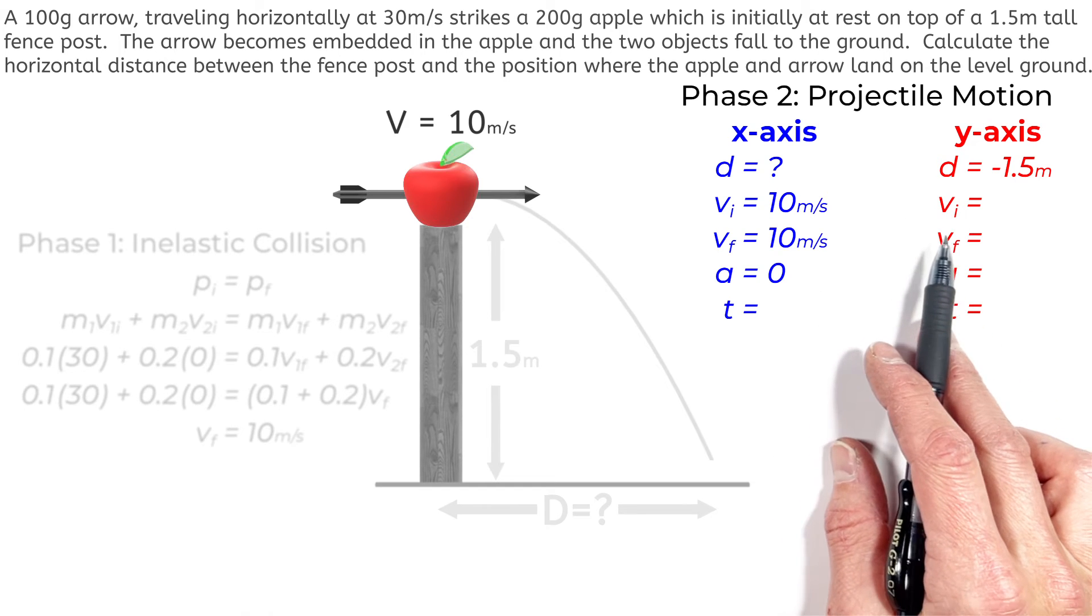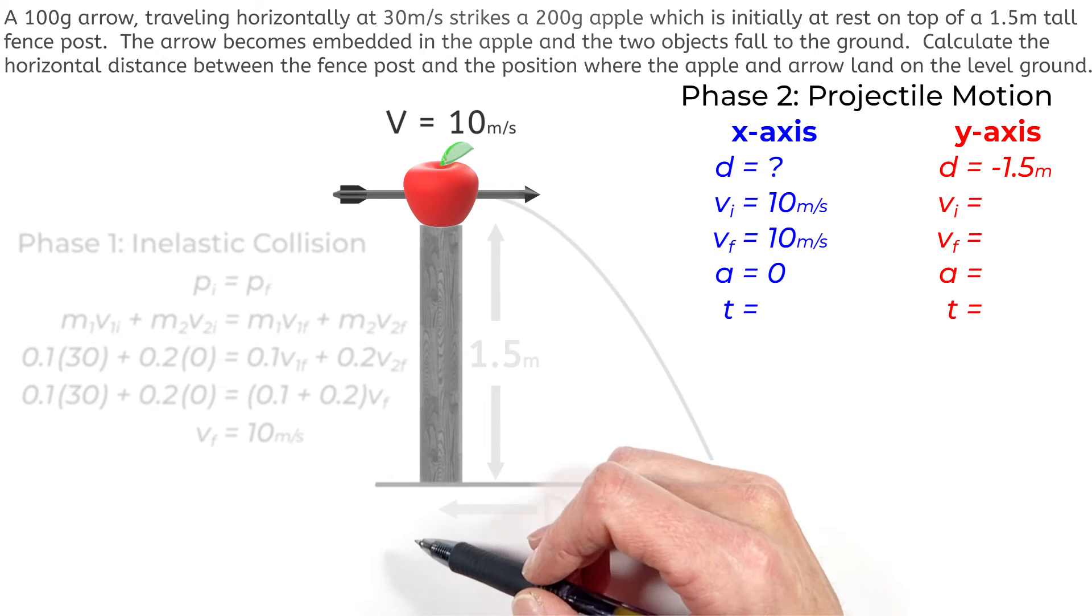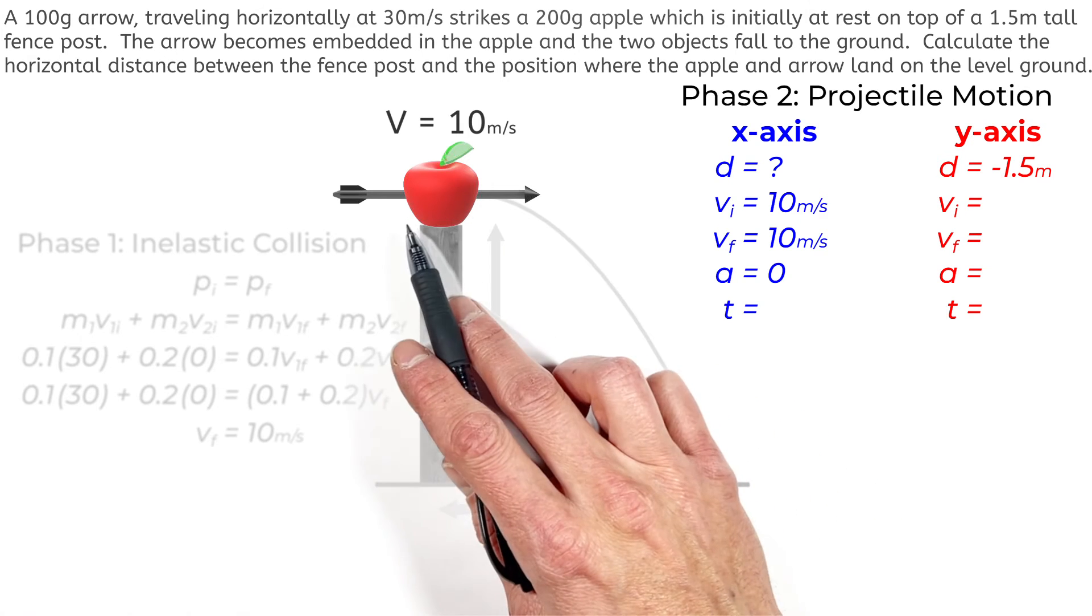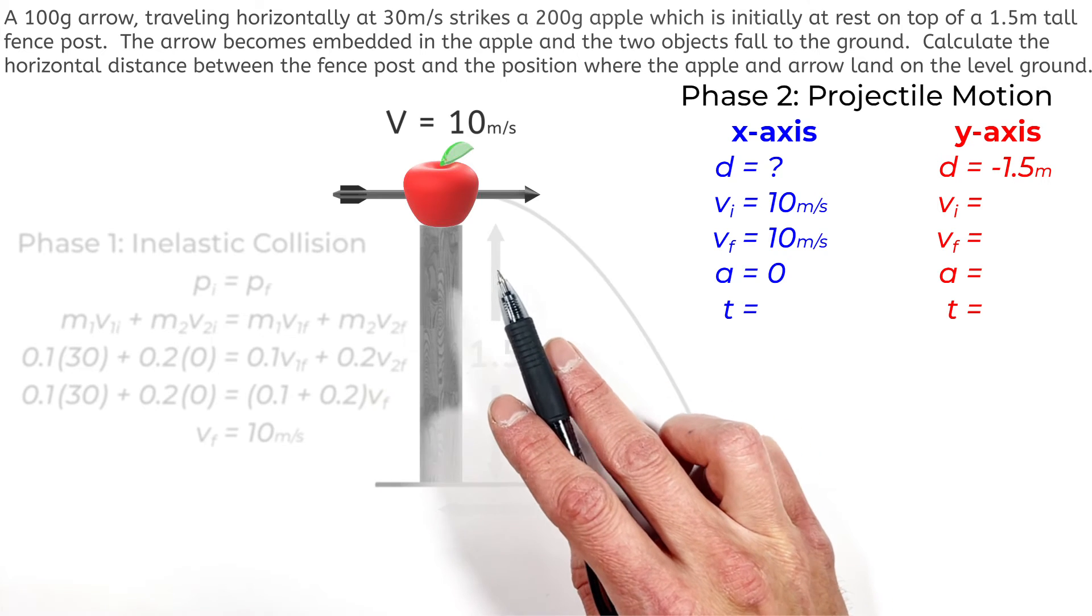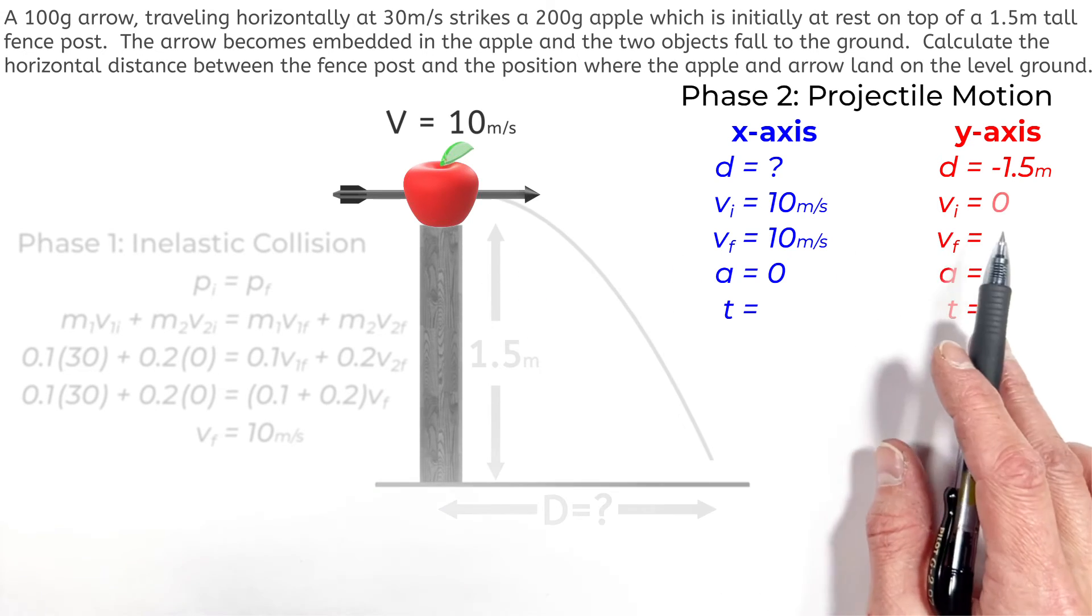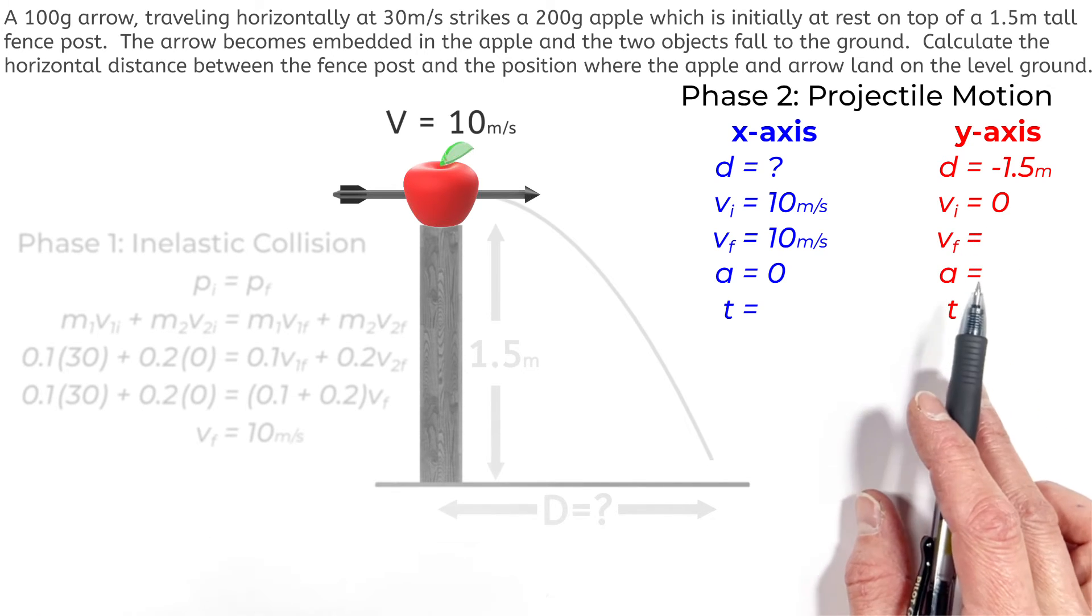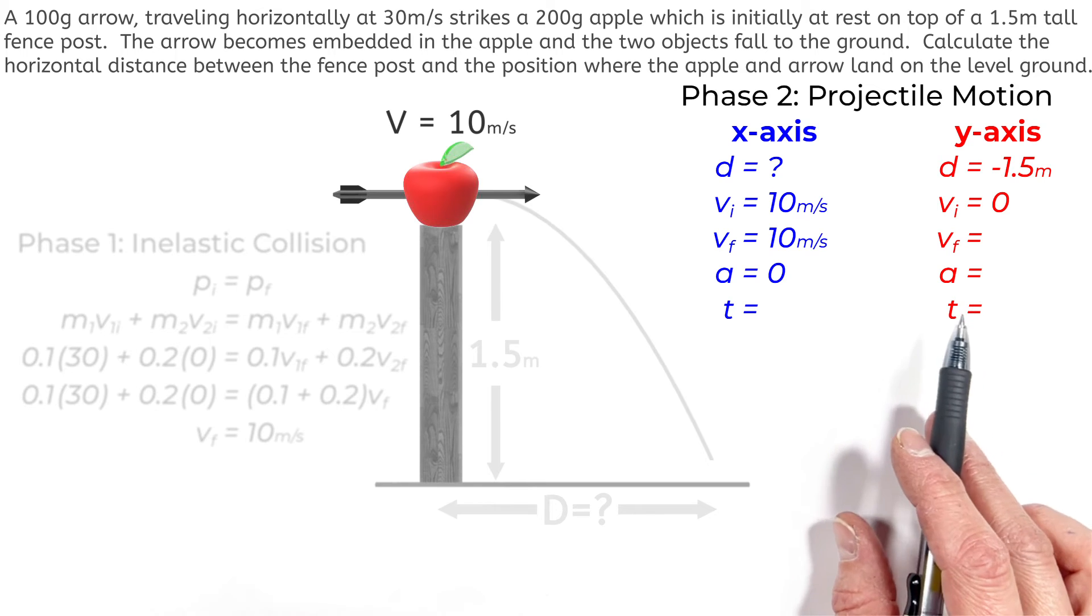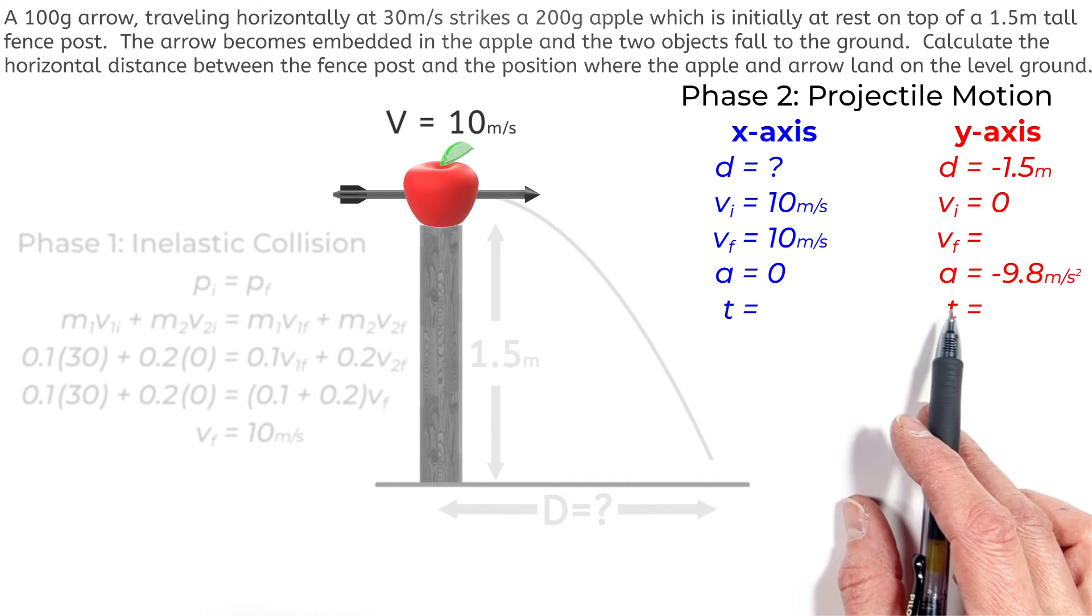The velocity in the y-axis. I know it's tempting to say that the velocity in the y-axis is 10 meters per second. But remember, just after this collision, the apple and the arrow were moving horizontally at 10 meters per second, not vertically. So our initial vertical velocity is in fact going to be zero. We don't know the final velocity, but the acceleration in the y-axis is going to be negative 9.8 meters per second squared. That is the acceleration due to gravity on Earth.